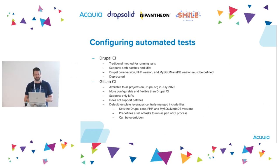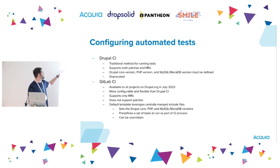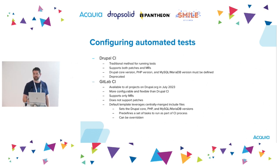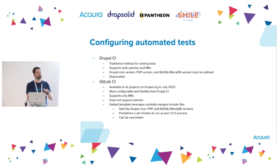Currently on Drupal.org, there are two ways to run tests. The first is Drupal CI, which has been around for years and supports both the patch workflow and the merge request workflow. When setting up tests you define the Drupal core version, the PHP version, and the DB version. However, Drupal CI has been deprecated in favor of GitLab CI. GitLab CI was made available to all projects on Drupal.org back in July, and it's way more configurable and customizable than Drupal CI. The only catch is it supports only merge request workflows, not patch workflows.